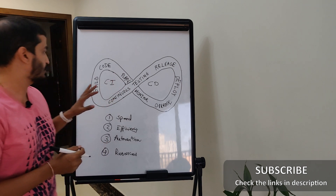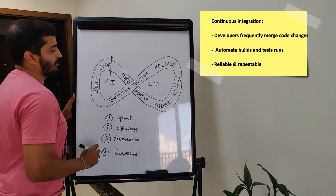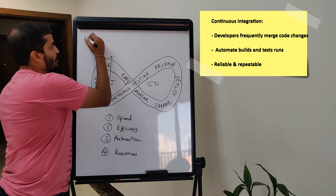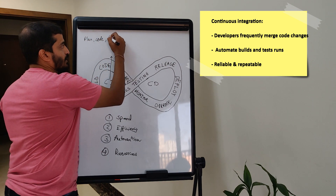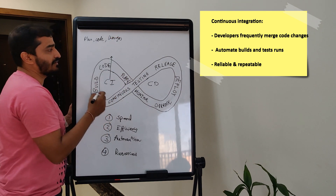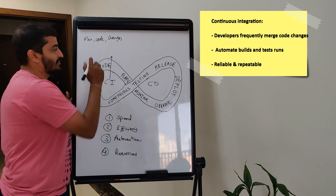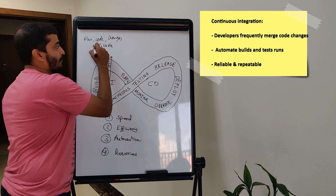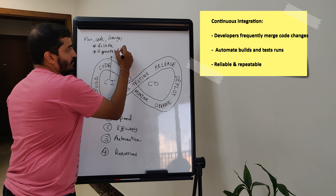Let's get started and understand the CI part first. Essentially, CI is a set of practices which allows a developer to plan, code, and make changes to their code until it reaches a point where it can be tested. The key point is that this has to be done in a reliable and, more importantly, a repeatable way.